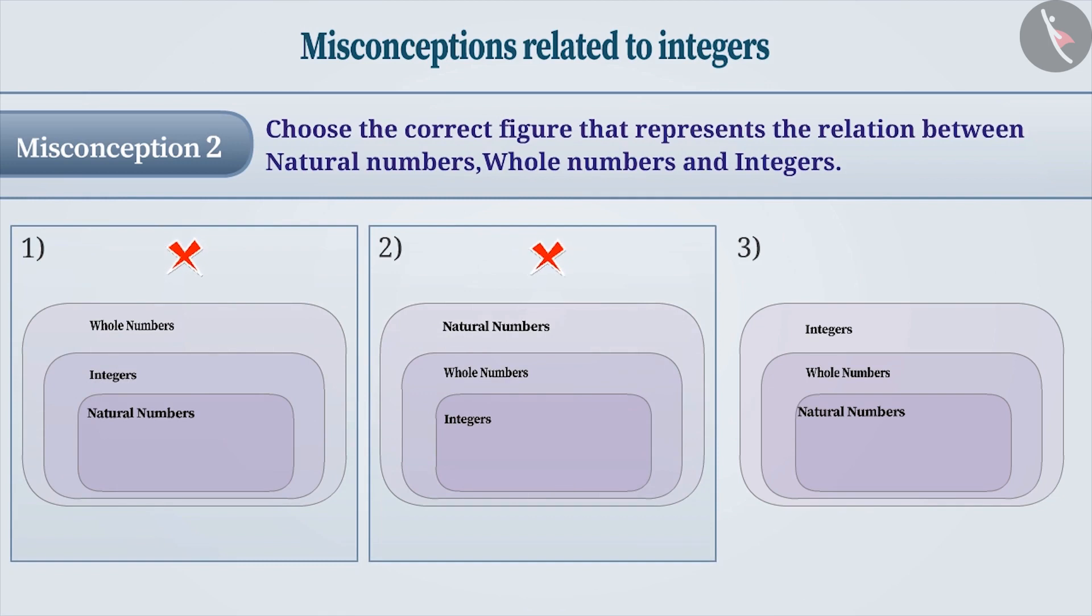The correct understanding is that natural numbers range from 1 to infinity. Whole numbers consist of all natural numbers along with zero.